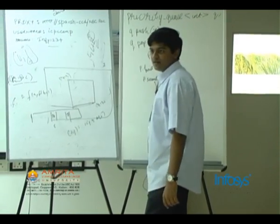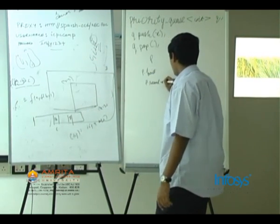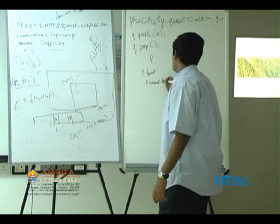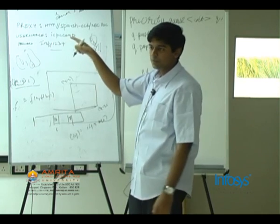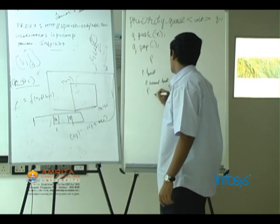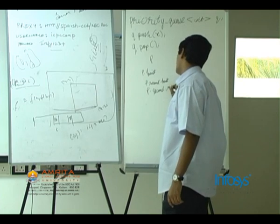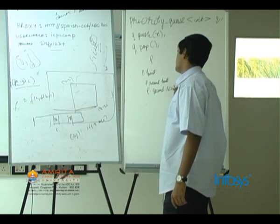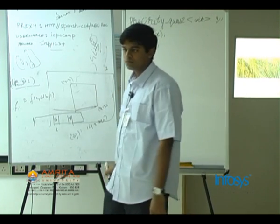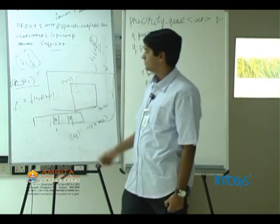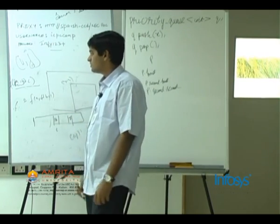`p.second` is another pair, so `p.second.first` will give you the double part, and `p.second.second` will give the int part. So you access members using `.first` and `.second`.